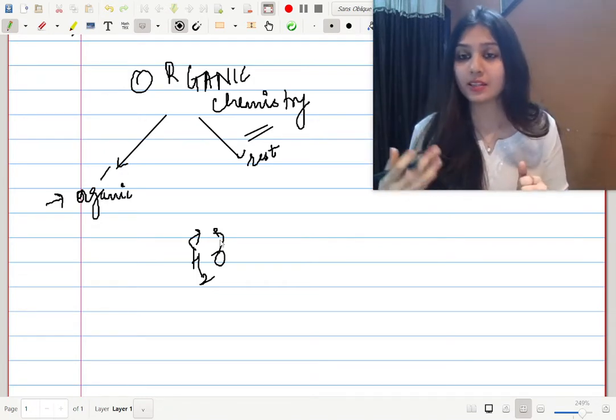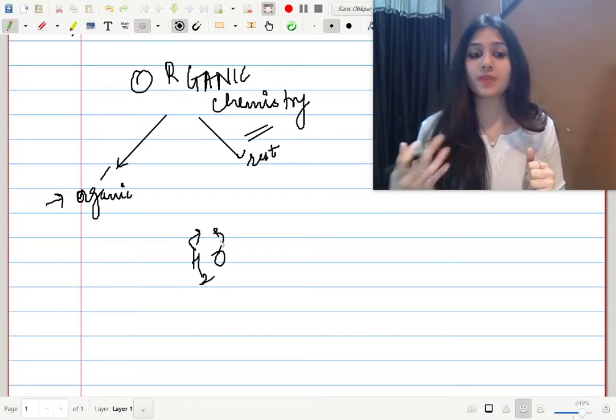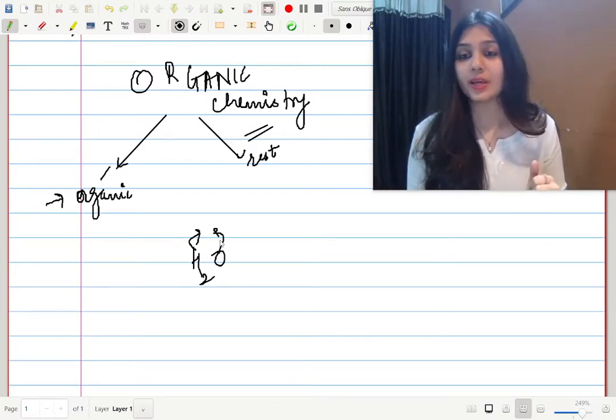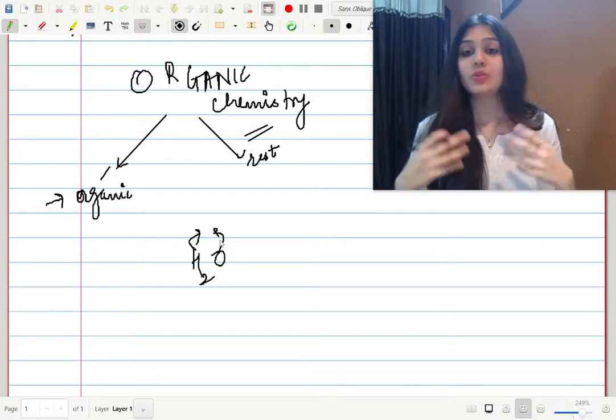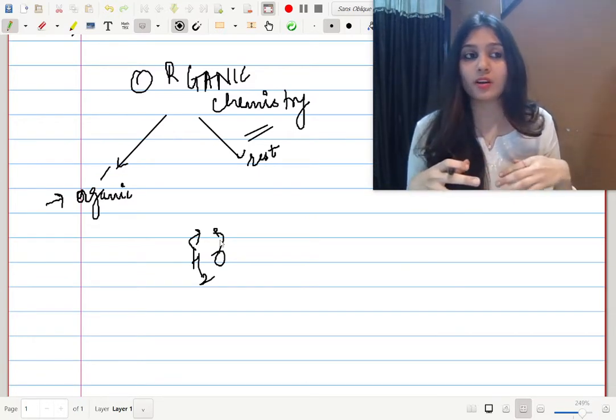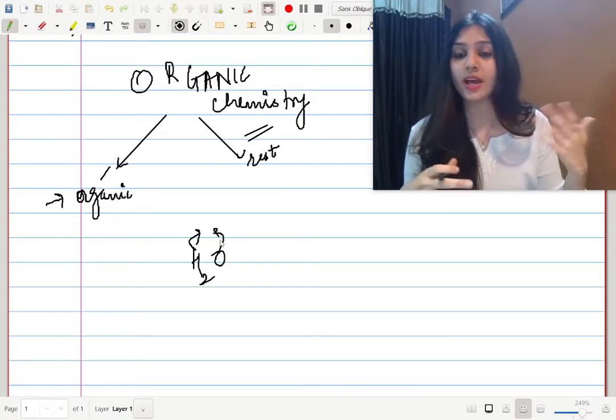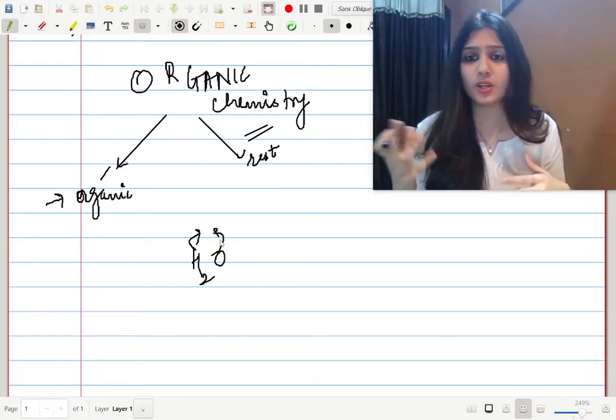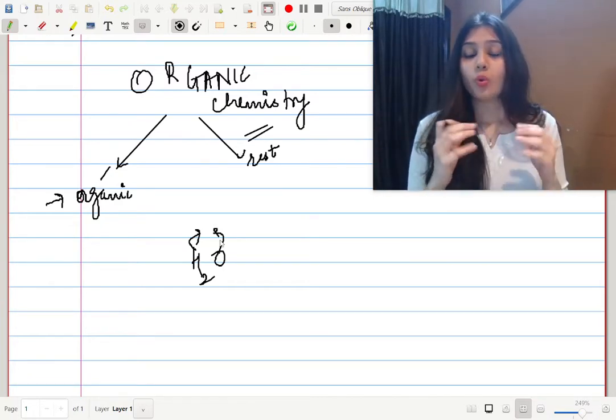So when people say something is chemical free, they actually mean to say something is organic. They say we are having organic stuff, we eat organic things, we eat organic broccoli or something. So what is organic and what is the rest?